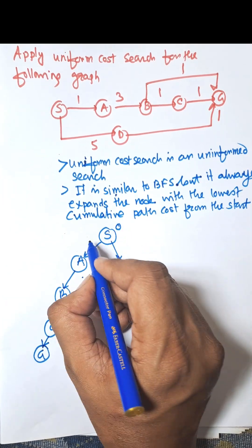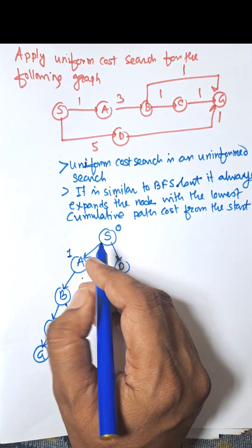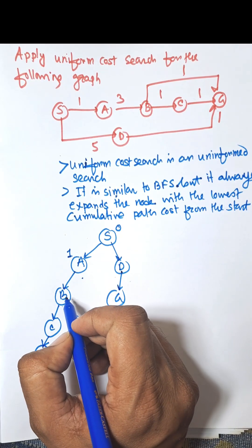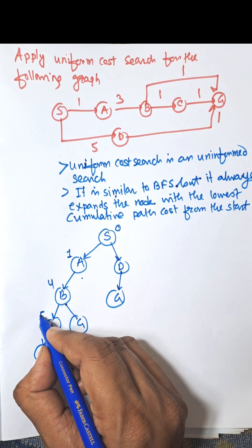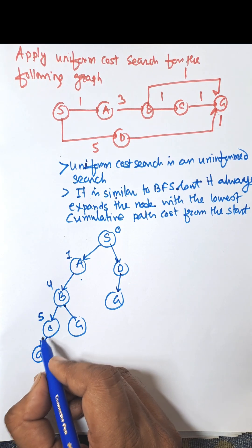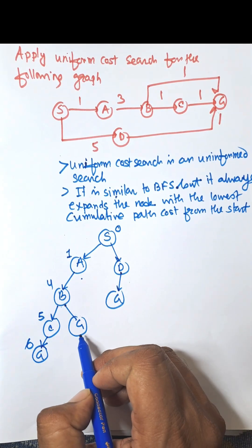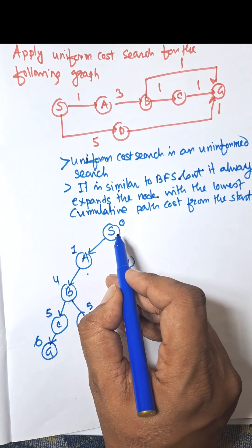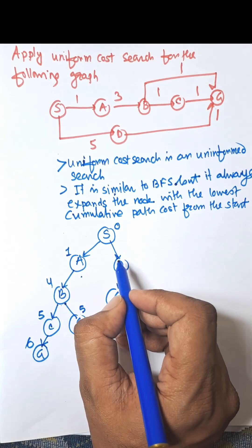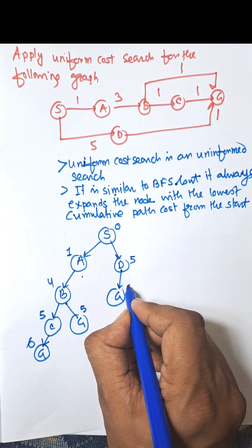S is considered as 0 as it is a starting node. From S to A cost is 0 plus 1, which is 1. From A to B, 1 plus 3, that is 4. From B to C, 4 plus 1, which is 5. From C to G, 5 plus 1, which is 6. And from B to G, 4 plus 1, that is 5. From S to D that is 5. And from D to G, 5 plus 1, which is 6. So these are the cumulative costs.